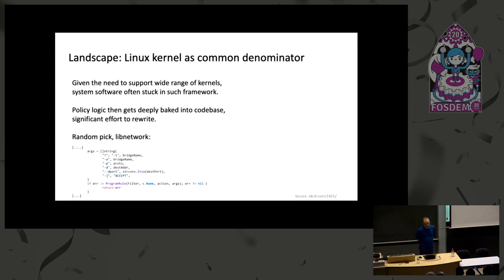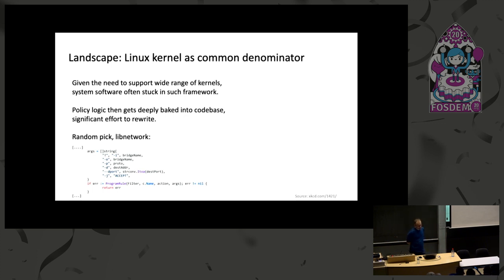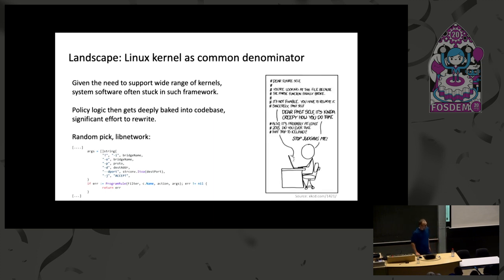System software today has to support a wide range of kernels because people in production are running old or latest kernels. You end up baking policy deeply into your code base, and there's significant effort to rewrite it. For example, libnetwork basically encodes arguments for later shelling out to IPTables — it's not really great. As noted in one KCD comment, if you want to fix it, you have to rewrite it, which is kind of creepy.